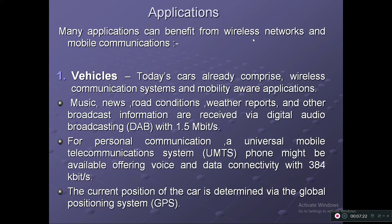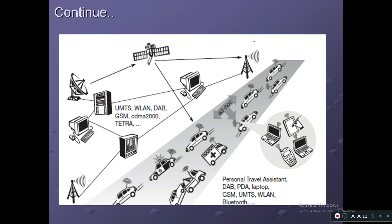We see these applications in our day-to-day lives. Vehicles — today's cars already comprise wireless communication systems. Mobility-aware applications such as music, news, road conditions, weather reports, and other broadcast information are received via digital audio broadcasting at 1.5 Megabits per second. For personal communication you can use UMTS (Universal Mobile Telecommunication System), which provides data connectivity at 384 Kilobits per second. The current position of the car is determined by the GPS installed in the vehicle.